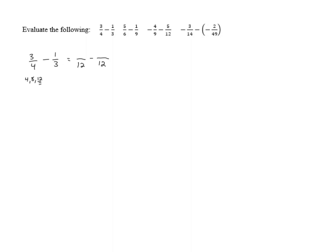Now to get from 4 to 12, we need to multiply by 3. So we'll also need to take the numerator and multiply by 3. 3 times 3 gives us 9. For the other fraction, 1/3, to get from 3 to 12, we needed to multiply by 4. So we'll also multiply the numerator by 4. 1 times 4 gives us 4.